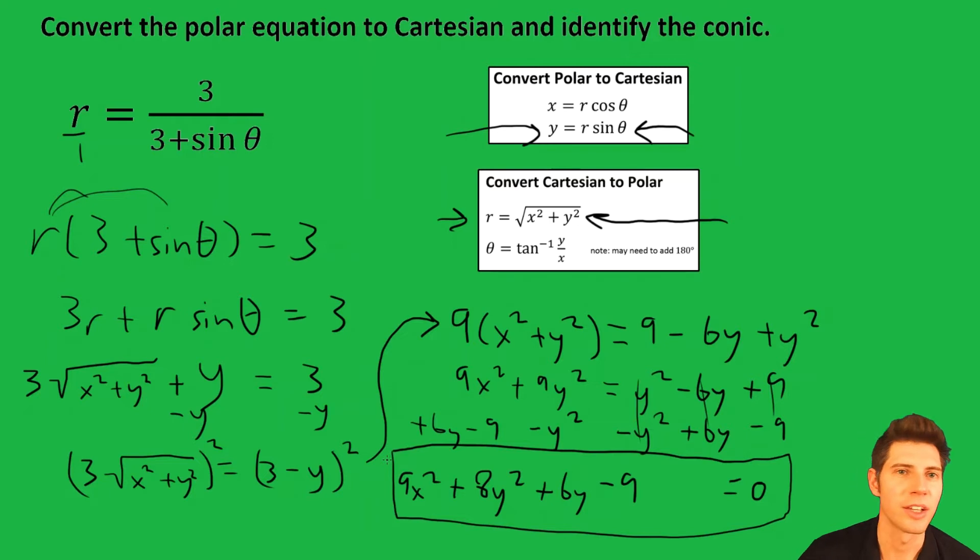That's a standard Cartesian form. And looking at it, if you know your shortcuts for how to tell what conic section it is, since x squared and y squared are both positive and since 9 does not equal 8, that means it's an ellipse. And that's the answer to the other question.